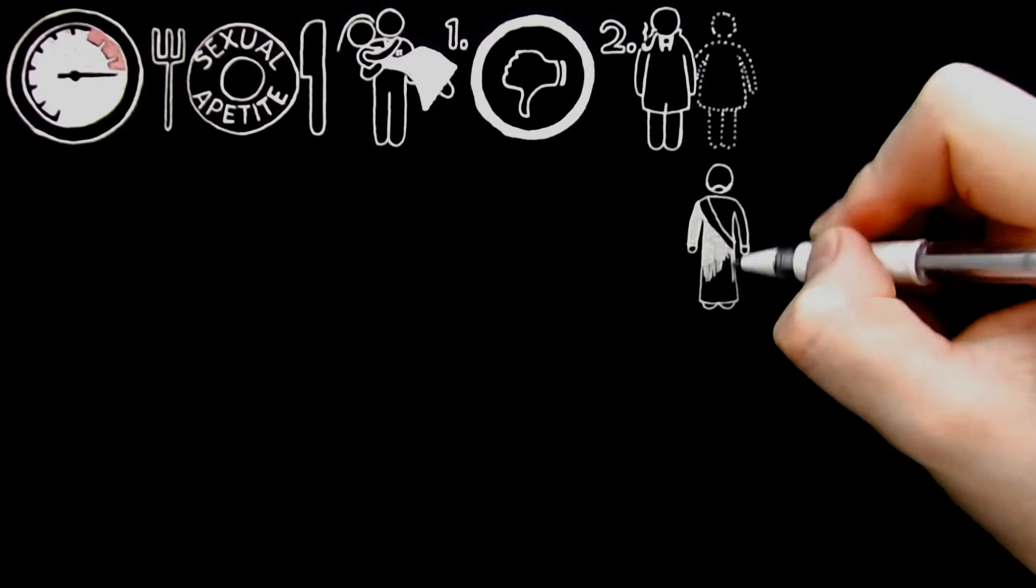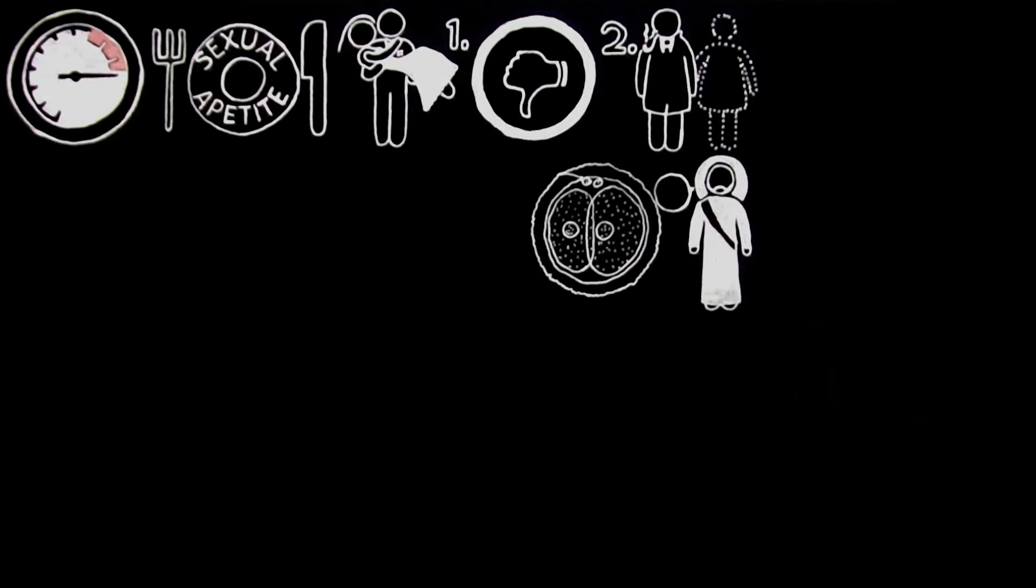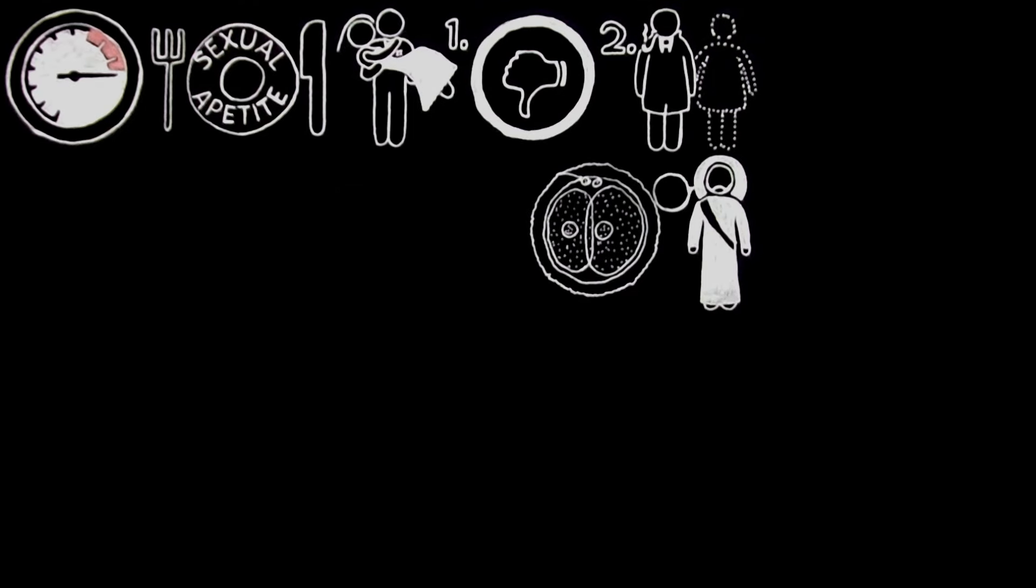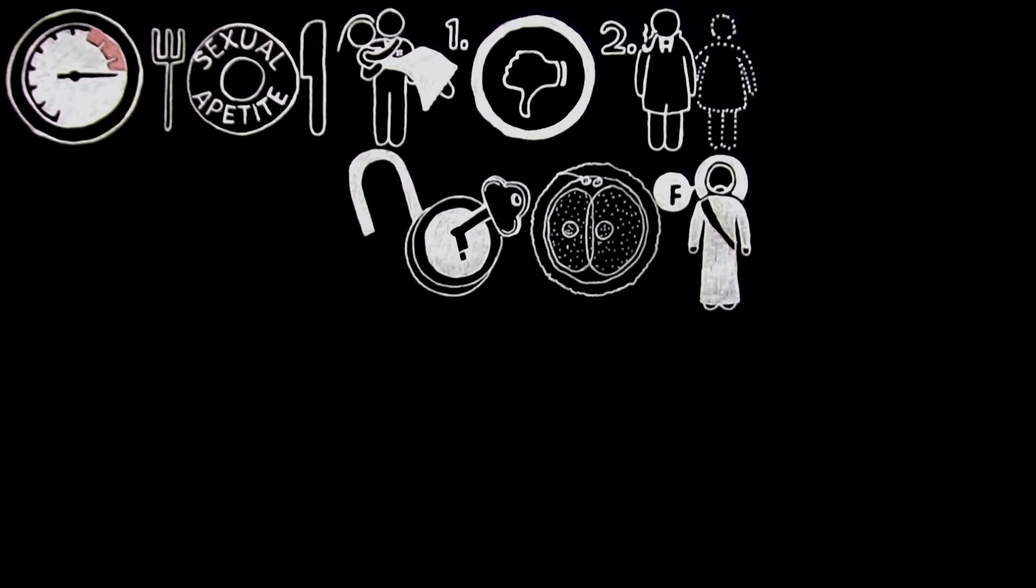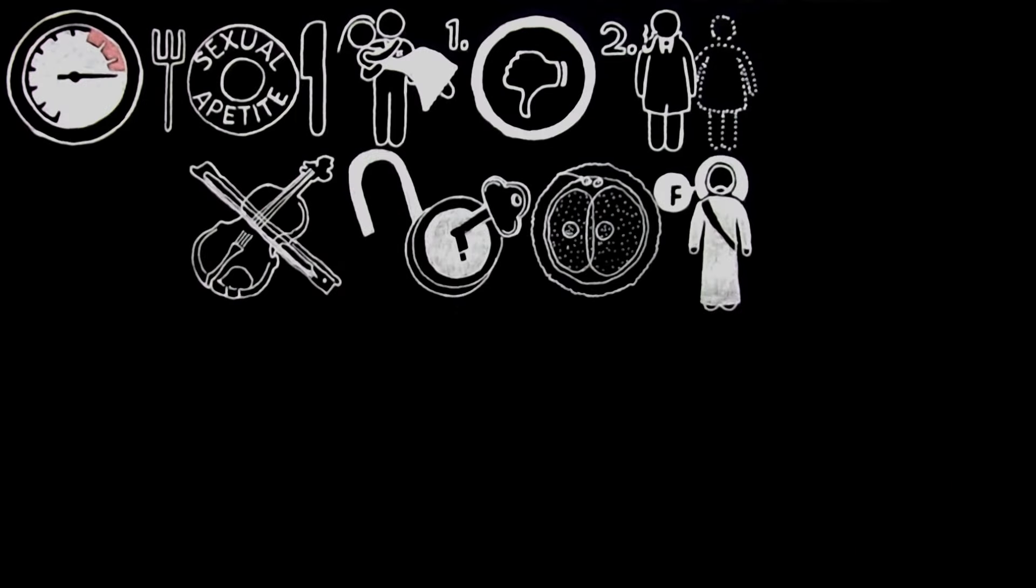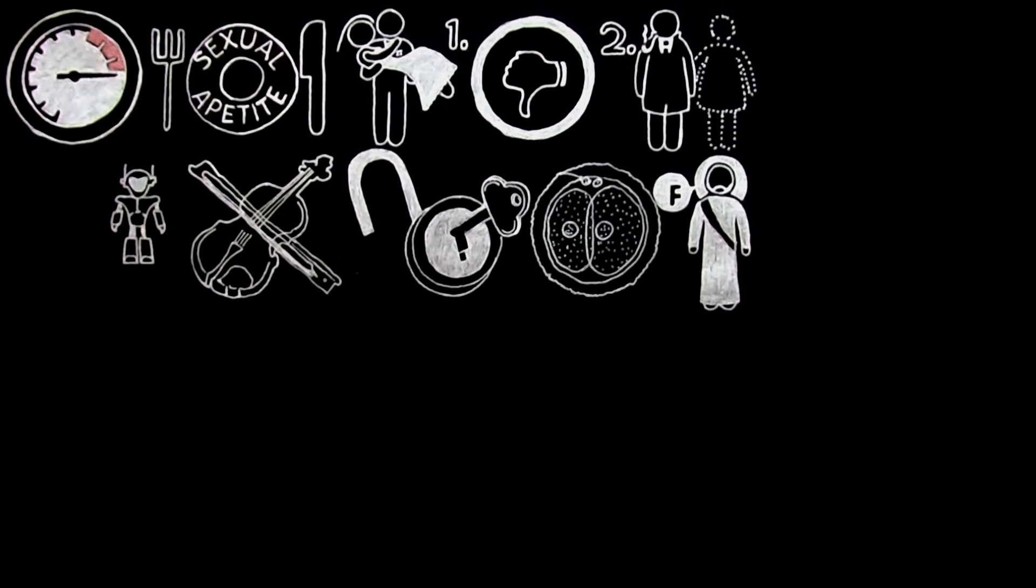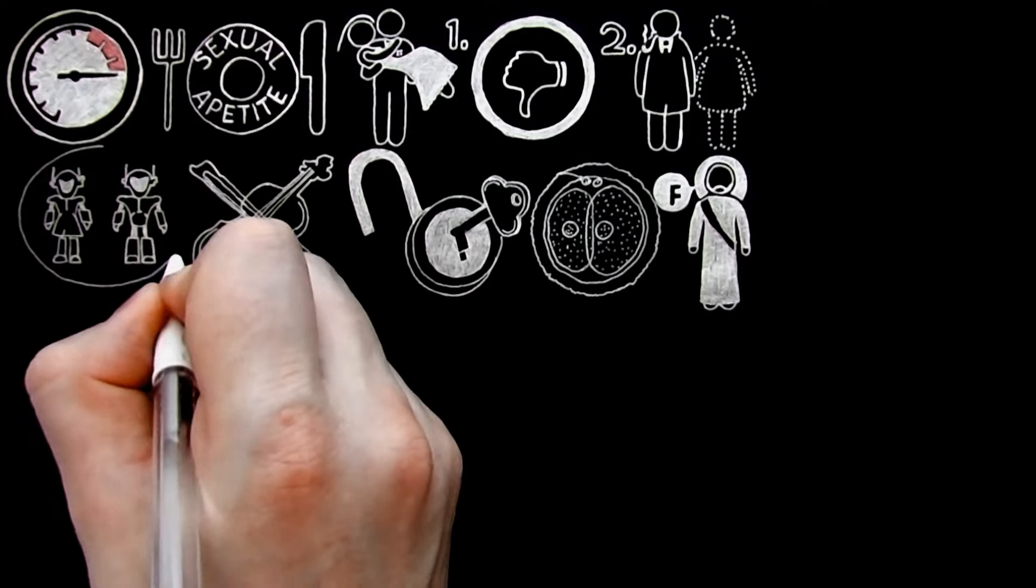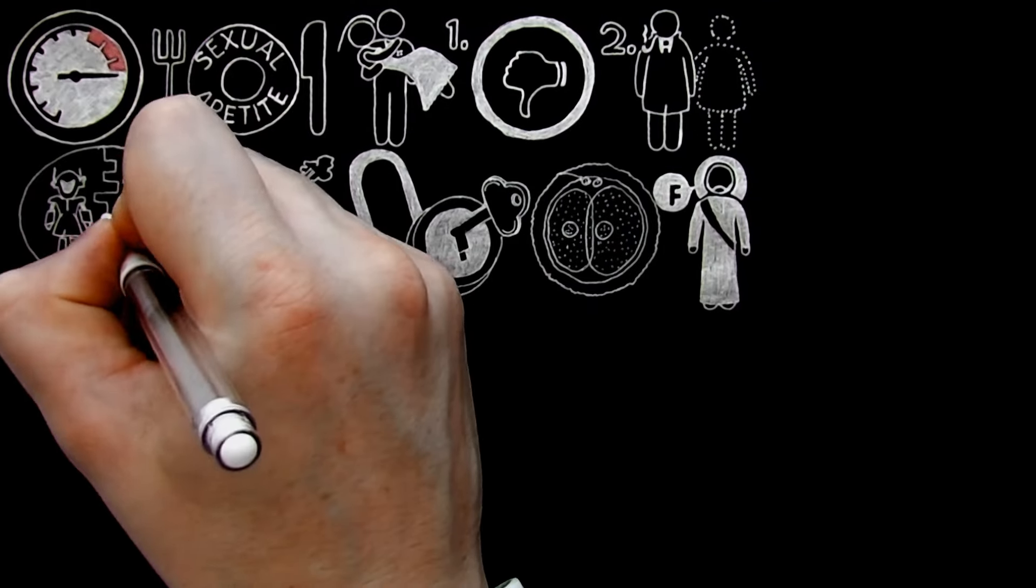The Christian idea of marriage is based on Christ's words that a man and wife are to be regarded as a single organism, for that is what the words 'one flesh' would be in modern English. And the Christians believe that when he said this, he was not expressing a sentiment, but stating a fact, just as one is stating a fact when one says that a lock and its key are one mechanism, or that a violin and a bow are one musical instrument.